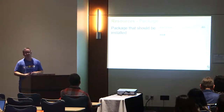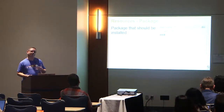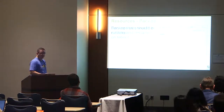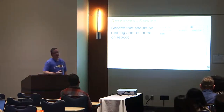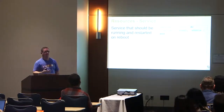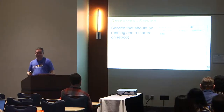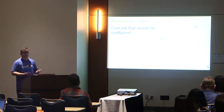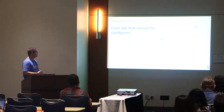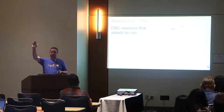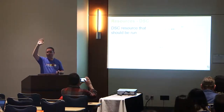A resource is a piece of the system and its desired state. What we're capturing in Chef is the desired state of our infrastructure. Examples: a package that should be installed on your system — like MySQL server with an action of install. Or a service that should be started and configured to run on reboot — for example a service called IPTables with an end state of started and enabled on reboot. It could be a file whose contents we want to manage, a cron job, a user, or a DSC resource. Who's heard of DSC before? No Windows admins in the room?